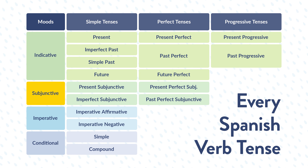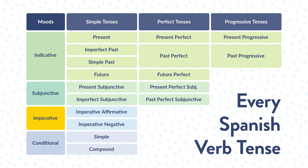Now let's take a look at the subcategories of the subjunctive mood. With this one, we're going to see simple tenses and perfect tenses. Within the subjunctive simple tenses, there's present subjunctive and imperfect subjunctive. Then, within the subjunctive perfect tenses, there are present perfect subjunctive and past perfect subjunctive. And with that, we've already reached the imperative mood. Within this category, we're going to see affirmative and negative conjugations, but there are no subtypes of tenses to learn. Lastly, our final mood will be the conditional mood, which has two tenses: simple and compound.